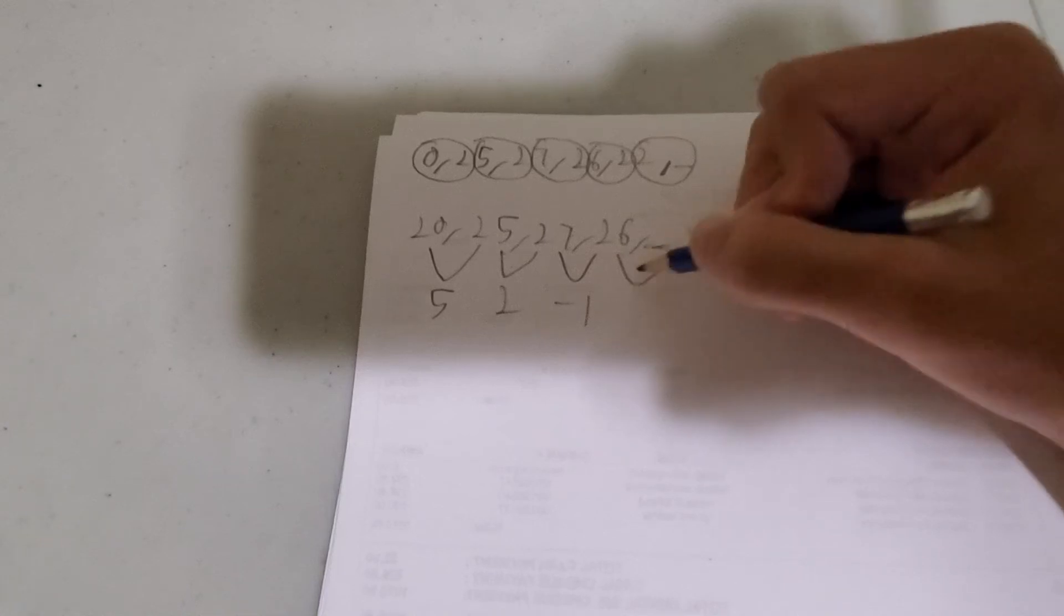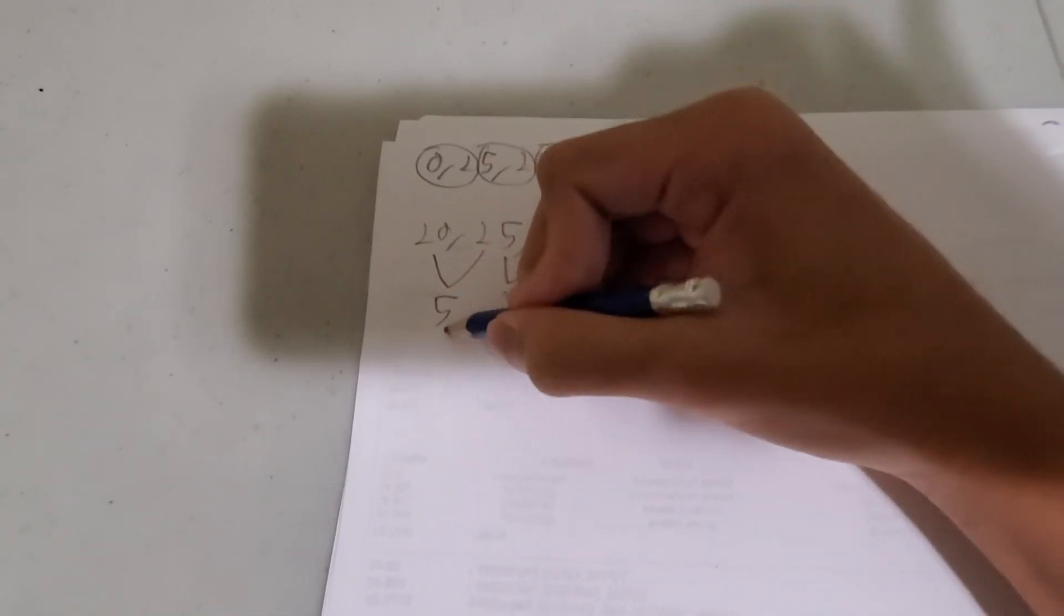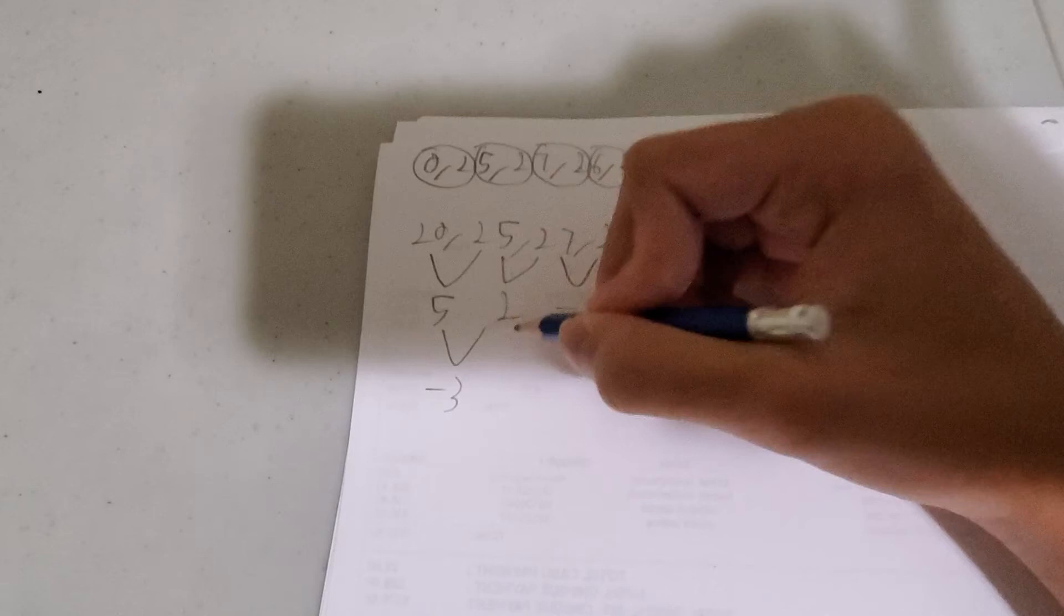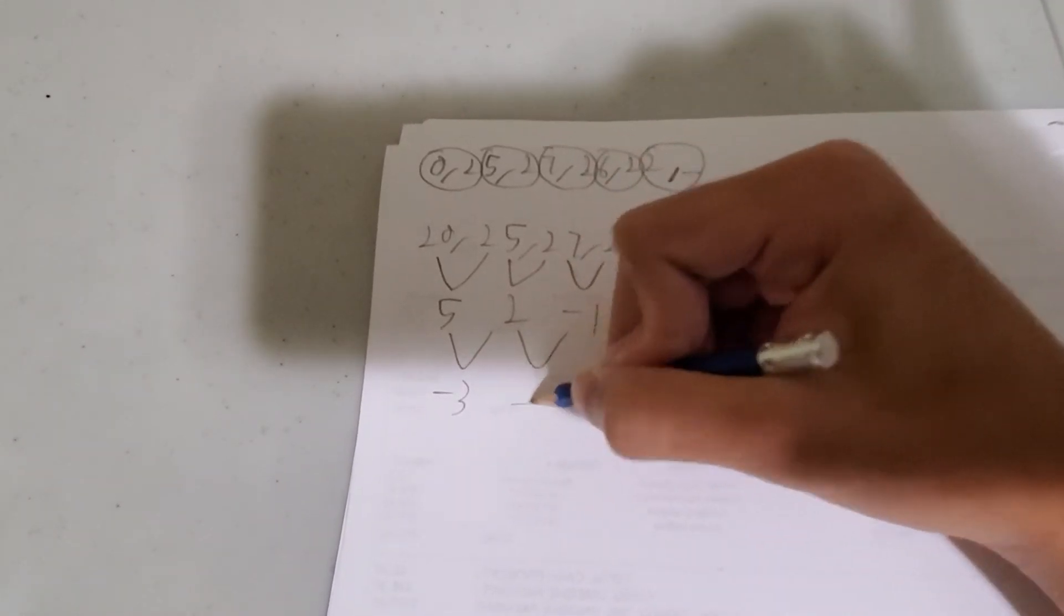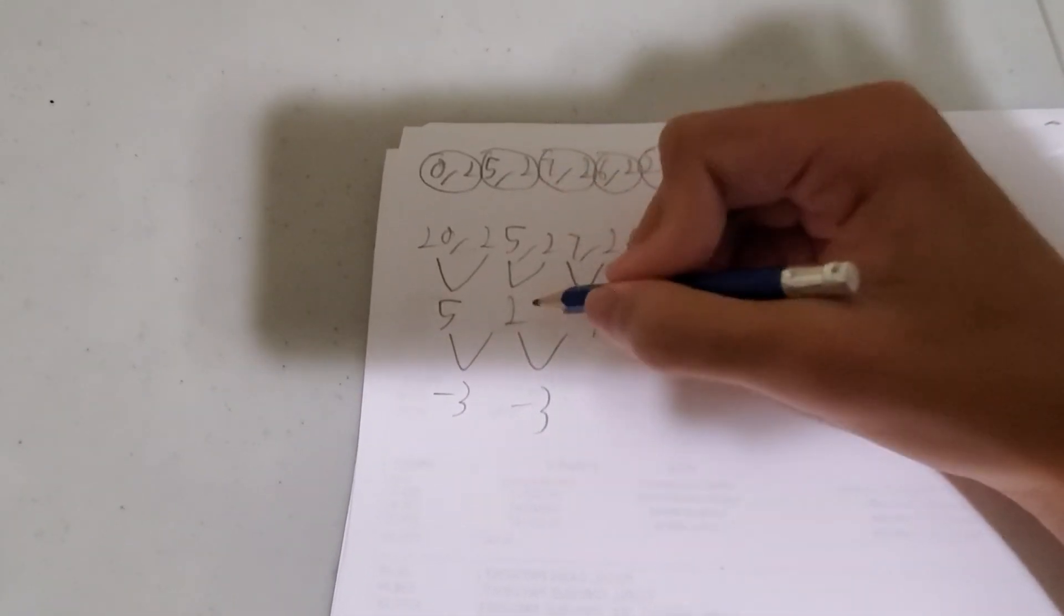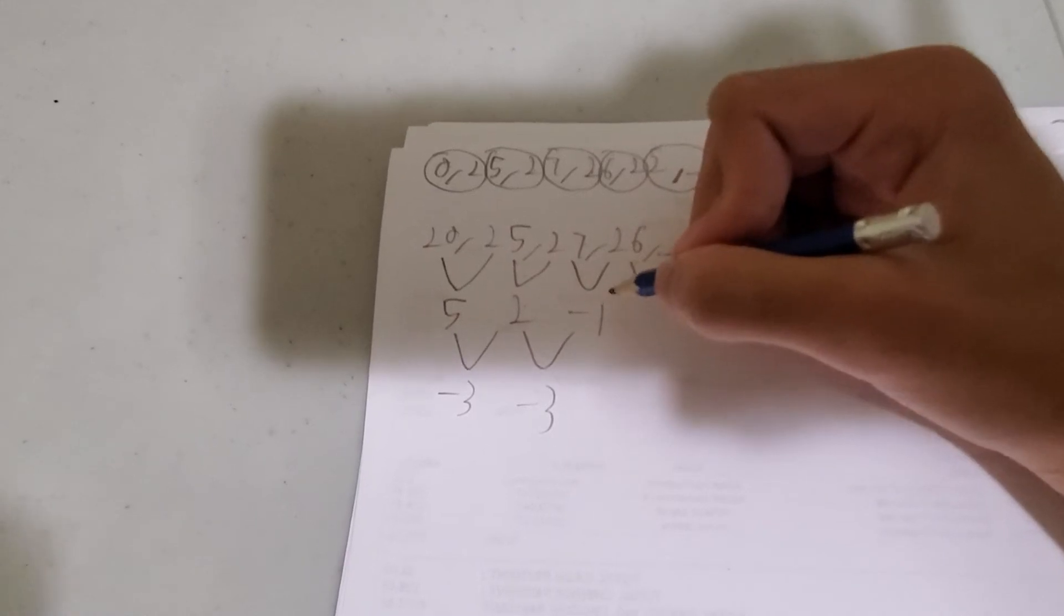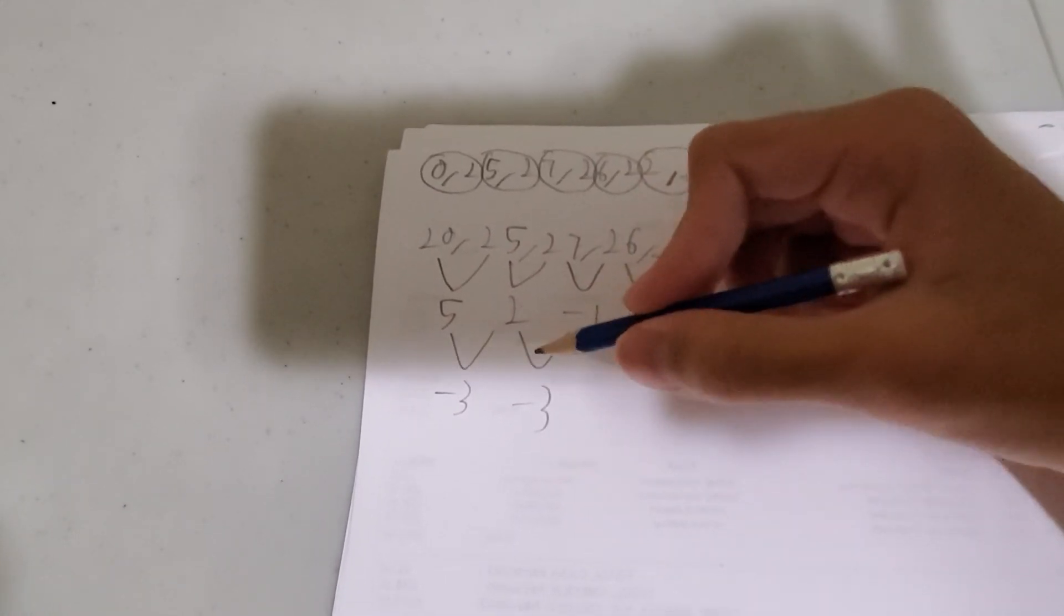So let's see, let's take the second differences first. So we have minus 3, because 5 minus 3 is 2, and we have also minus 3. Oh wow, it's the same. So 2 minus 3 is minus 1. So yeah, the second differences are the same here.